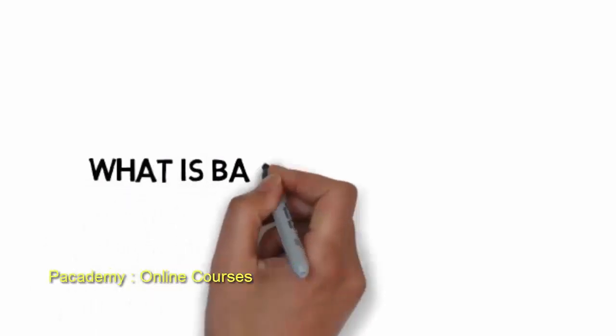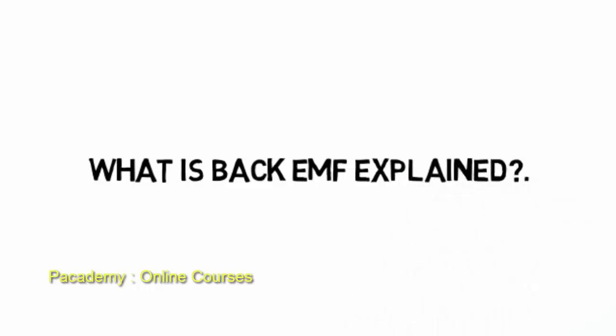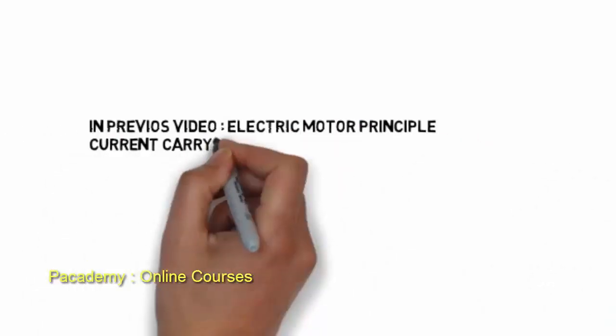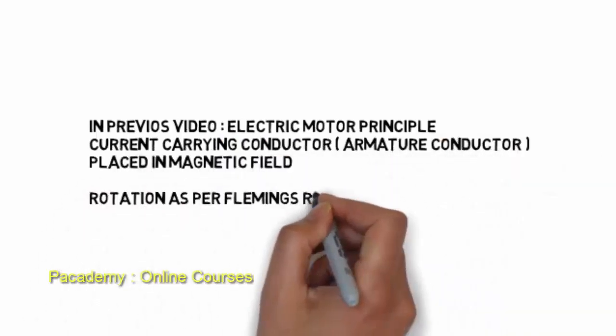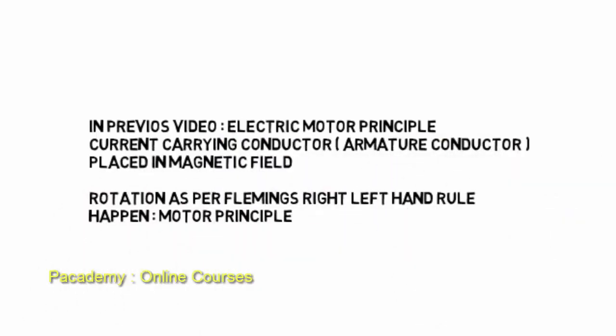This is lecture 2 in learning electrical motors, and this is about back EMF. Let's look into what back EMF is all about. In the previous lecture we learned the motor principle, which states that whenever a current carrying conductor — the armature conductor in the case of a motor — is placed in a magnetic field, rotation of the conductor will happen as per Fleming's left hand rule.